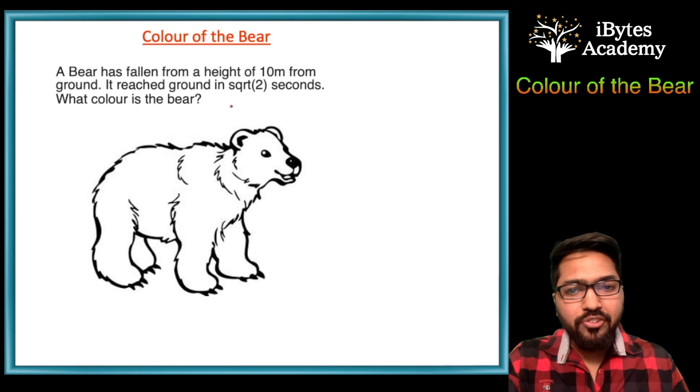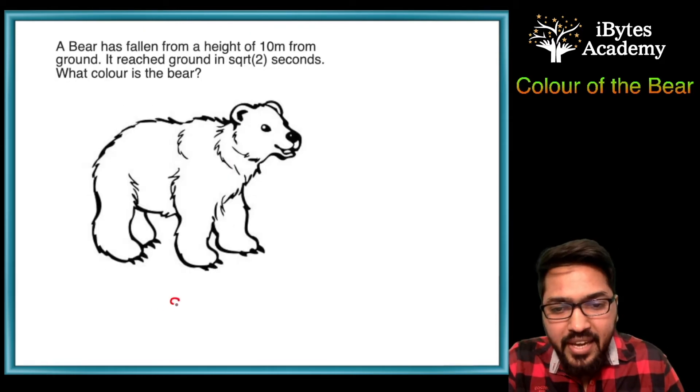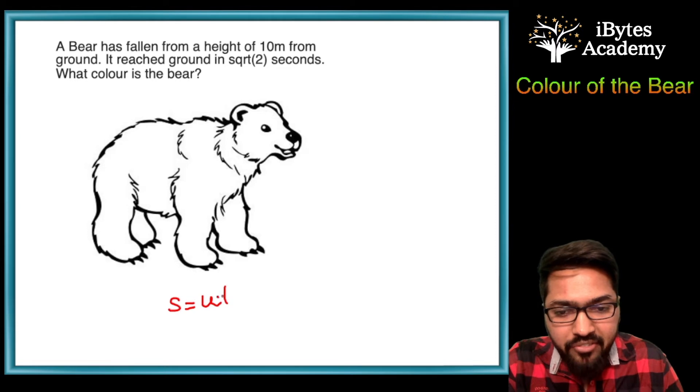So we are given the situation of a free fall from a height of 10 meters and the time of reaching the ground is square root 2 seconds. So let's try and apply laws of motion and see if we get somewhere.